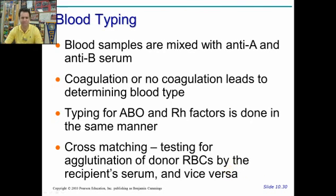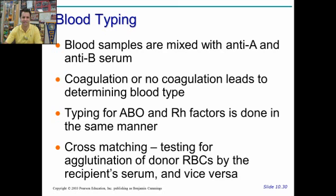Blood typing we'll get into in detail, so we'll run through this really fast. Blood samples are mixed with anti-A and anti-B serum to see which one coagulates. Then you cross-match and compare which ones clotted and which ones didn't.